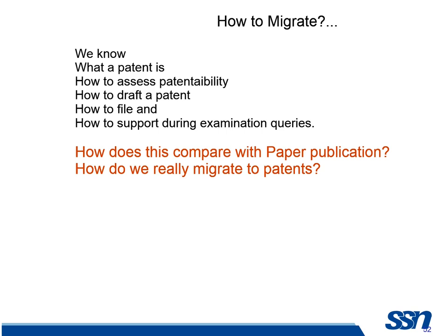Now we come to the second part: how to migrate. We've already known what a patent is. How to assess whether my work is patentable or not, how to draft a patent, how to file, and how to support during examination queries. Now, how does it compare with paper publication and how will I shift to patents?